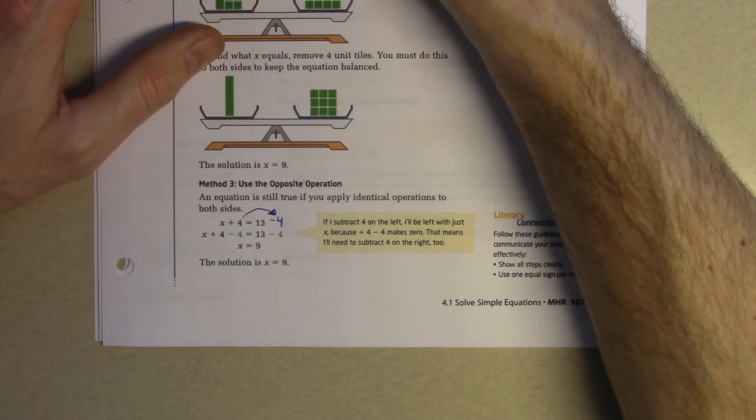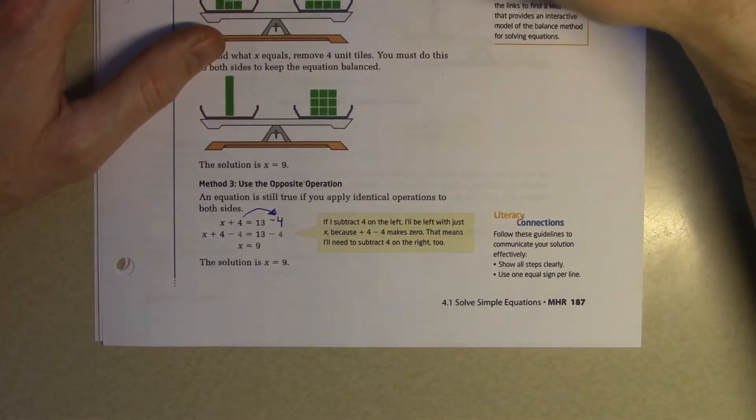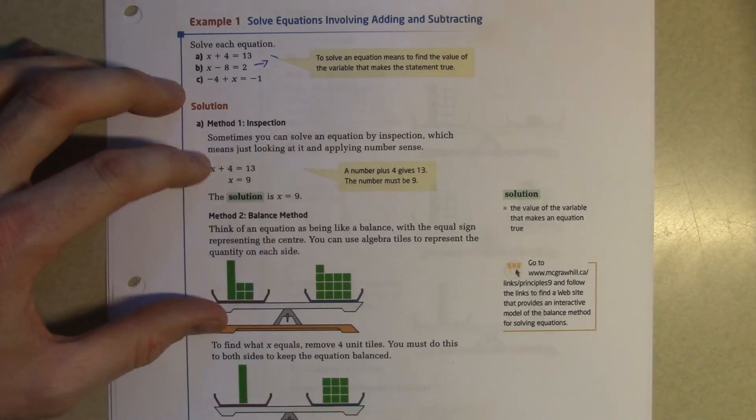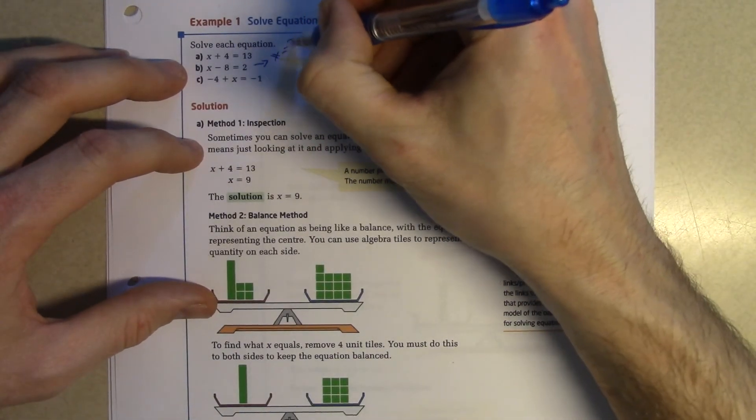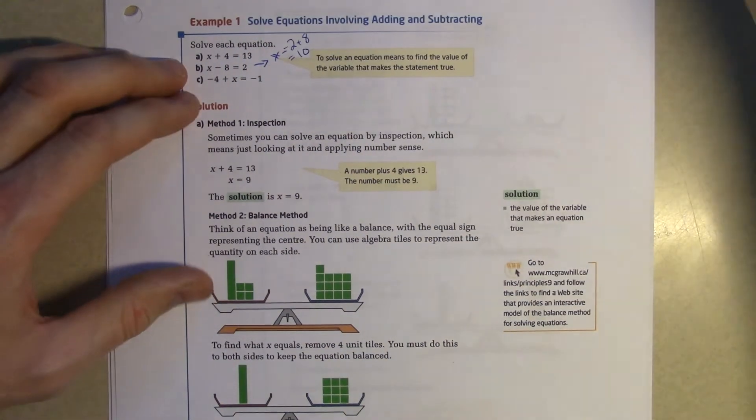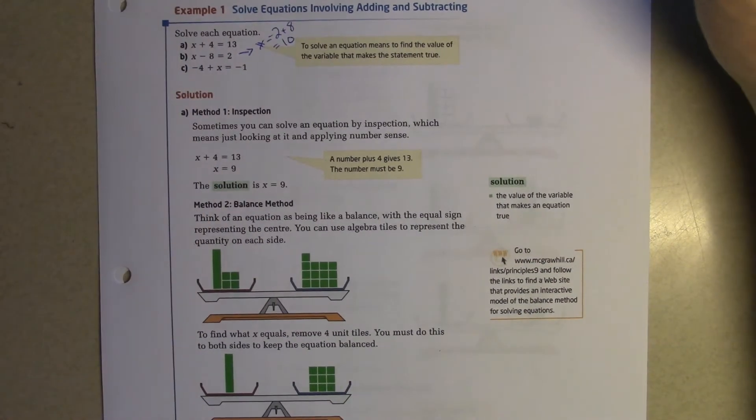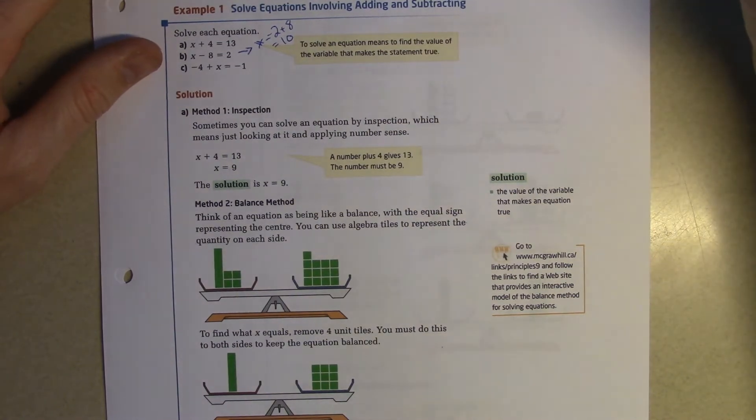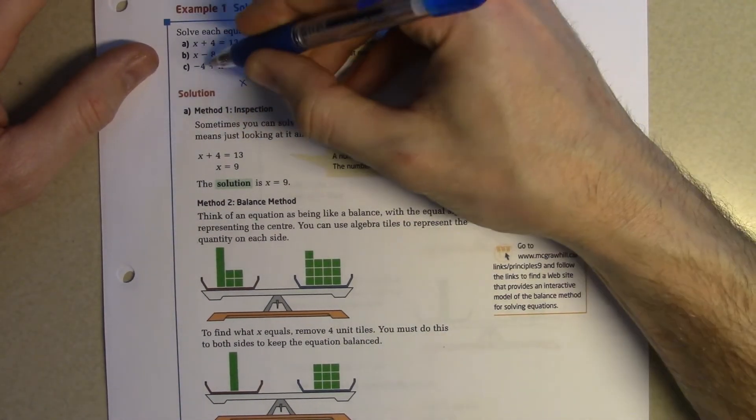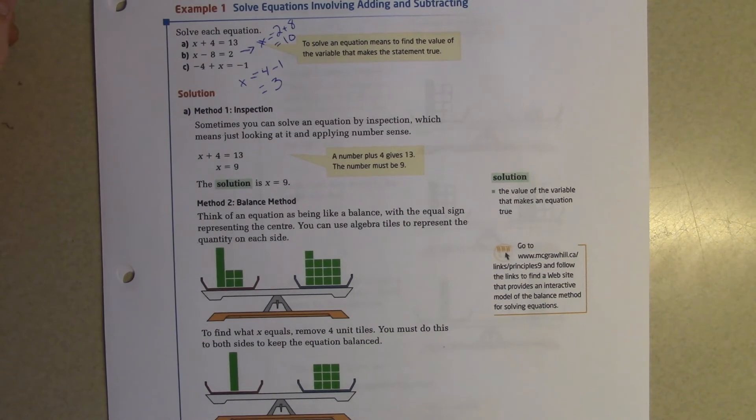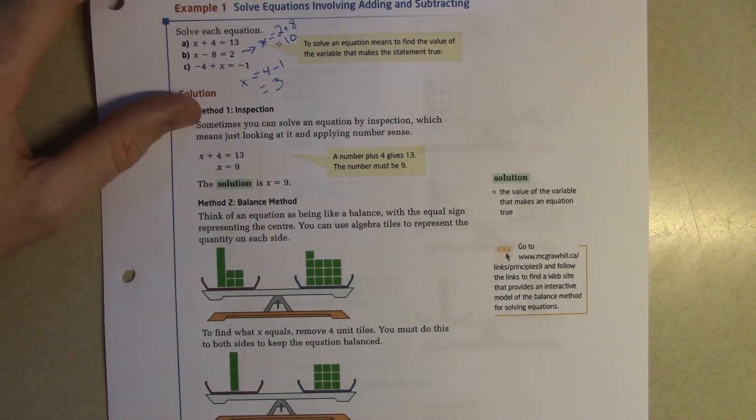Let's look at the next one, x minus 8 equals 2. Alex, x equals 2 plus 8, very good. So x is equal to 10. And this one here, Matthew, the negative 4 becomes positive minus 1 is 3. I could have done negative 1 plus 4, would have been the same thing.